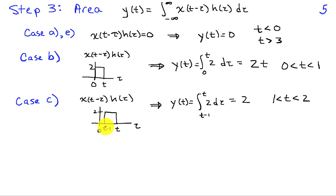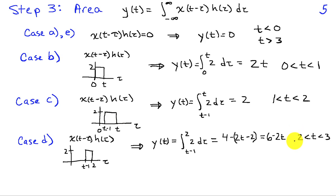In case c, the product x(t − τ) · h(τ) was 2 between t − 1 and t. So y(t) is the integral from t − 1 to t of 2 dτ, and the area is exactly 2. That is valid whenever t is between 1 and 2, and the area isn't changing as t changes, as long as t is between 1 and 2. In case d, the product was 2 between t − 1 and 2, so y(t) is the integral from t − 1 to 2 of 2 dτ, which gives 6 − 2t, and that applies whenever t is between 2 and 3.